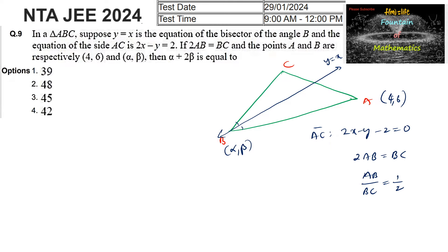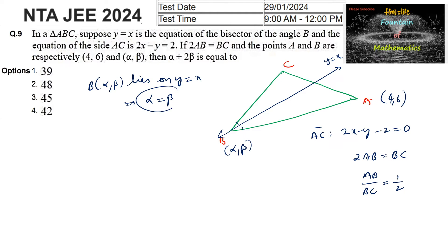Since the line y = x is the bisector, point B (α, β) lies on the line y = x, which implies that α = β. This is the first condition.